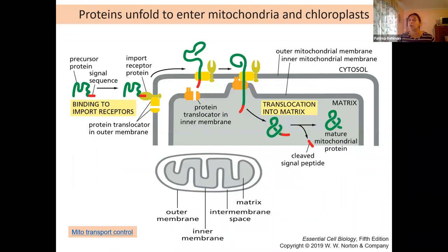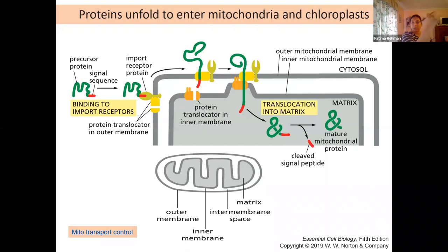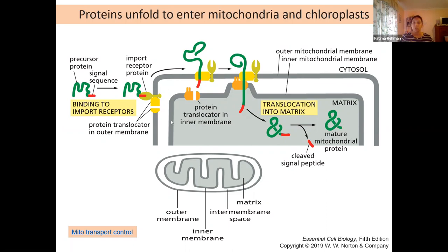Now let's look at another place where proteins need to go in and out — in mitochondria and chloroplast. This is another example of double membranes: you have outer mitochondrial membrane and inner mitochondrial membrane. Similarly in the chloroplast, you also have outer and inner membranes. The environments in each one of these spaces is going to be very different — the membranes are different and the internal environments in those compartments are different as well.